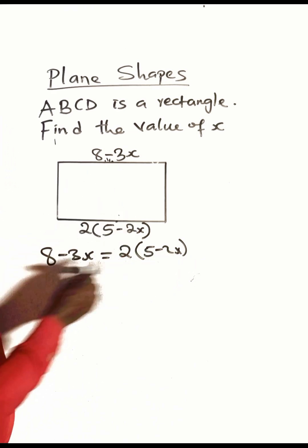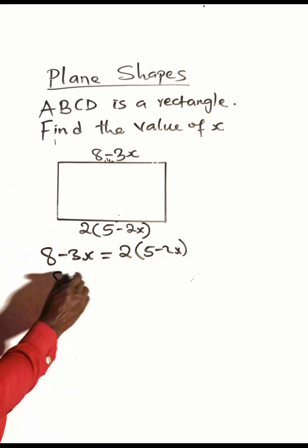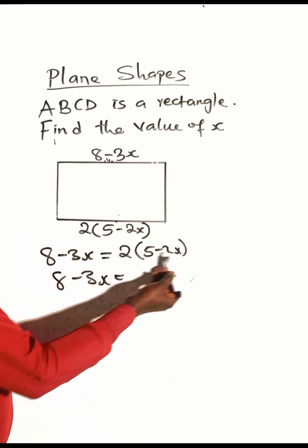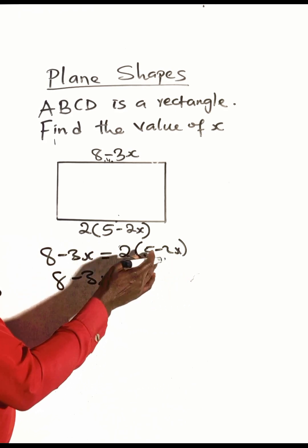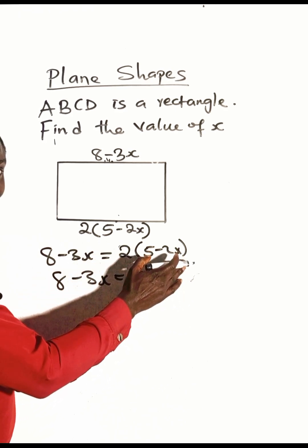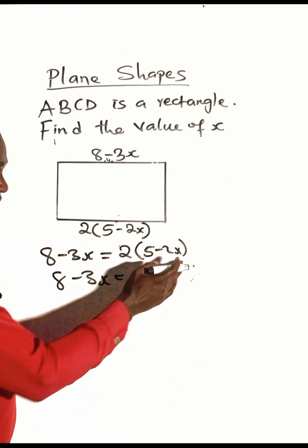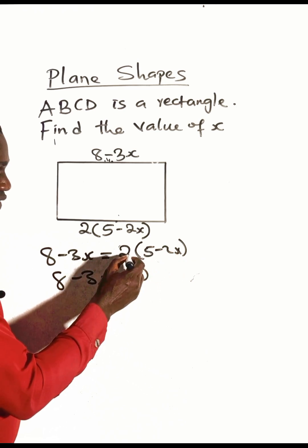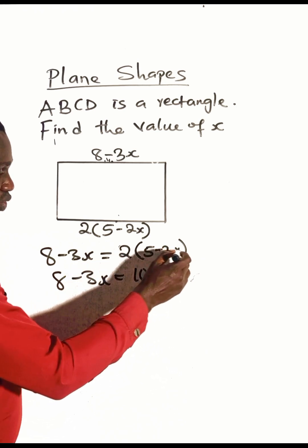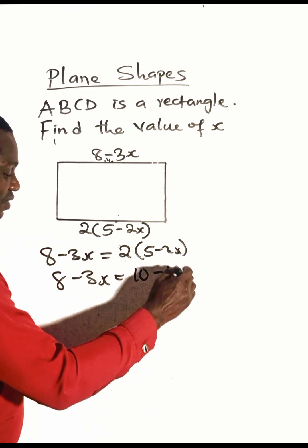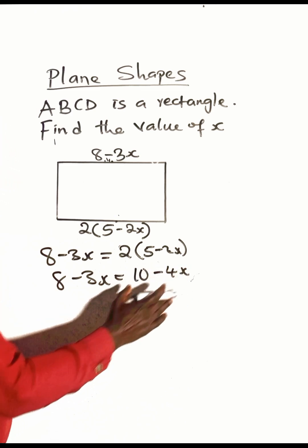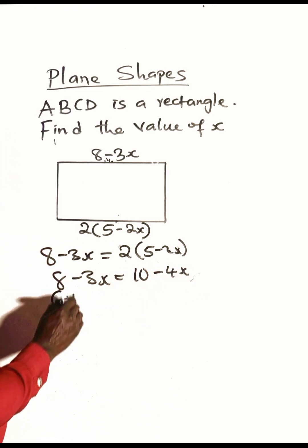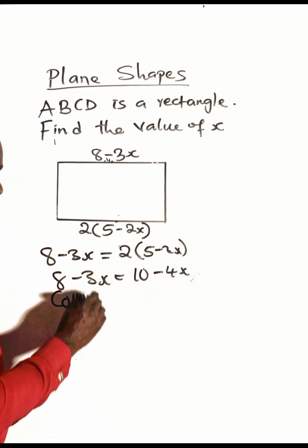Let's open this bracket. Eight minus three x will be equal to — the number outside the bracket multiplies everything inside — so two times five is ten, and two times minus two x is minus four x.